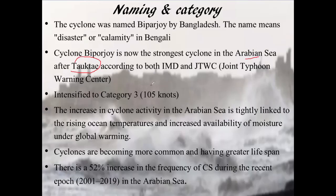Cyclone Biparjoy has become the strongest cyclone and has intensified to Category 3, which corresponds to a speed of 105 knots. Generally, cyclones are more common in the Bay of Bengal, but in recent years we are seeing an increase in cyclone activity in the Arabian Sea.